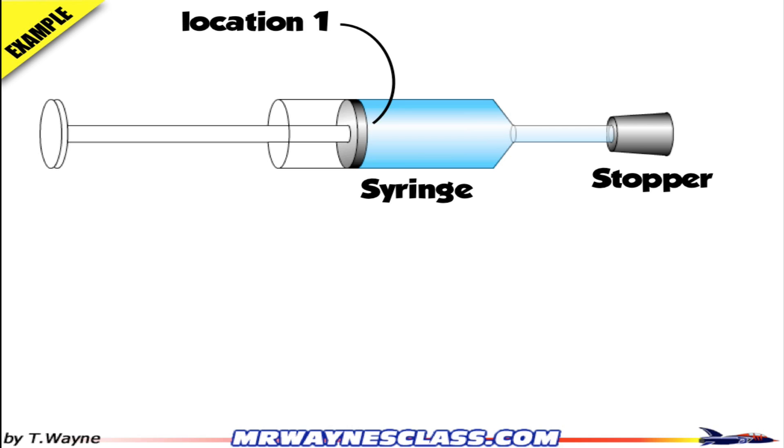I'll call the plunger location 1 and the stopper location 2. At the plunger, I'm pushing down with a force of 60 newtons, and the cross-sectional area is 3 centimeters squared. Where the stopper is, the area is 0.5 centimeters squared.